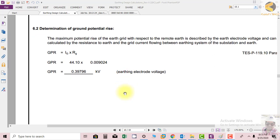The most important constant after determining the maximum ground fault current level and ground resistance is the ground potential rise.